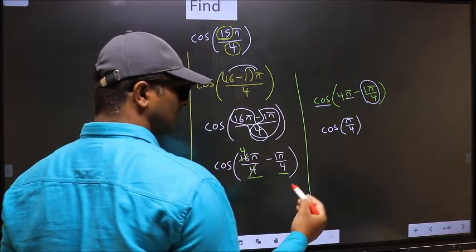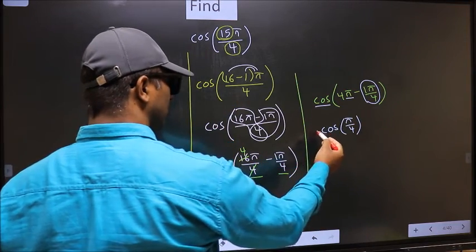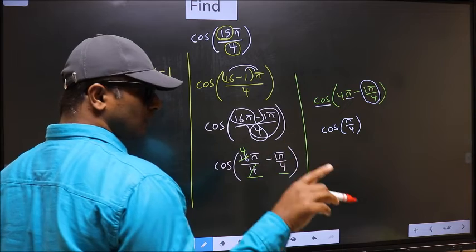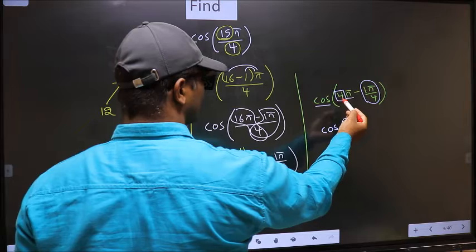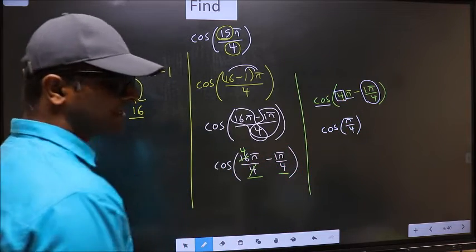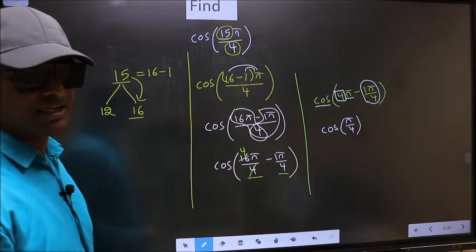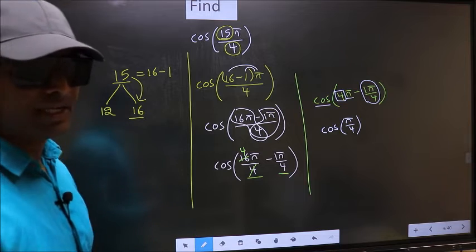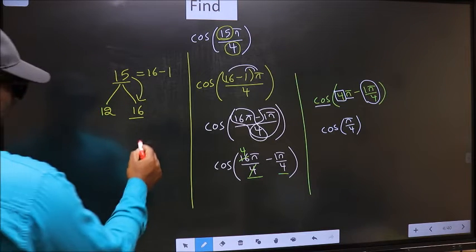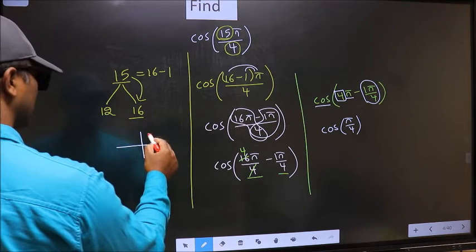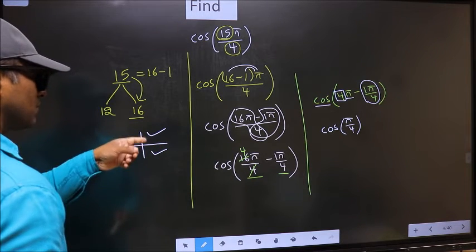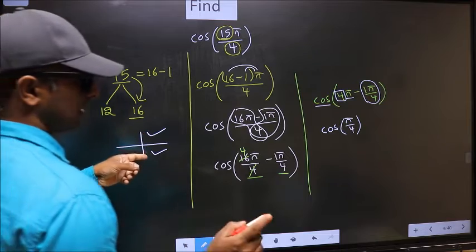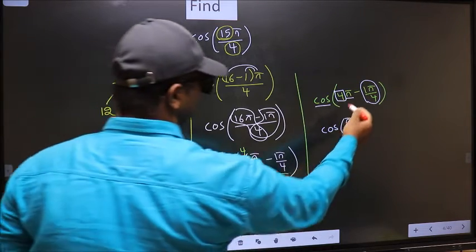Now the question arises, will we get plus or minus? To answer that, look at the number before π, which is 4. 4 is even. All the even multiples of π lie either in the first or fourth quadrant. To check which quadrant, we should look at this symbol.